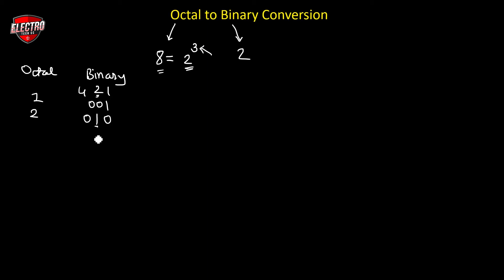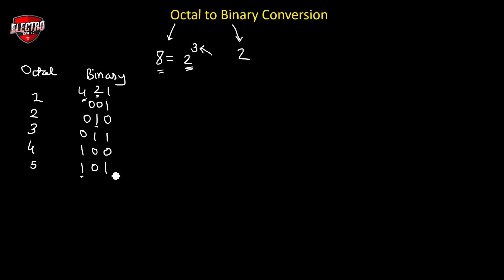For octal 3, we use 2 plus 1 equals 3, giving binary 011. For octal 4, we use 4 times 1 equals 4, giving binary 100. For octal 5, we use 101, since 4 plus 1 equals 5. For octal 6, we use 4 plus 2 equals 6, giving binary 110. For octal 7, we use 4 plus 2 plus 1 equals 7, giving binary 111. This is the complete octal to binary conversion table.